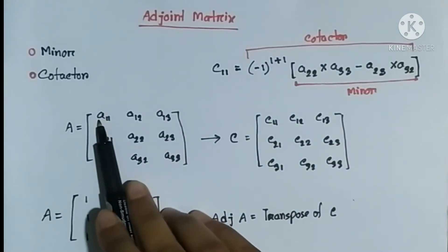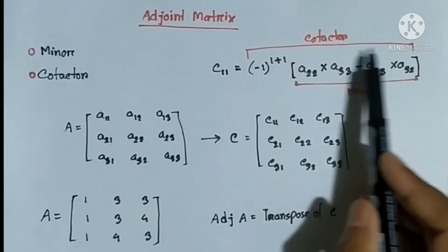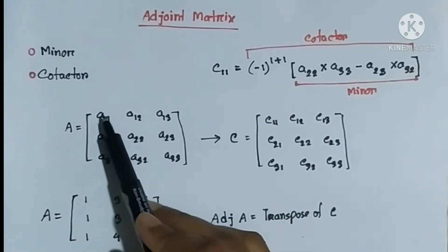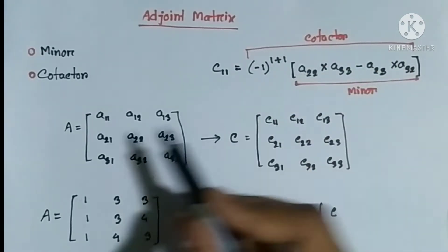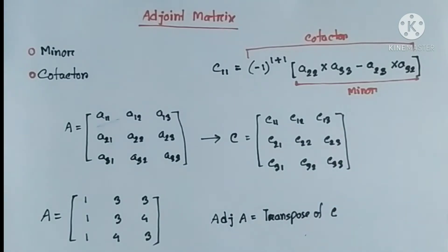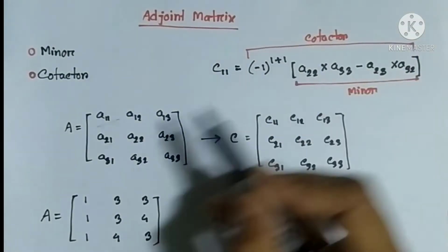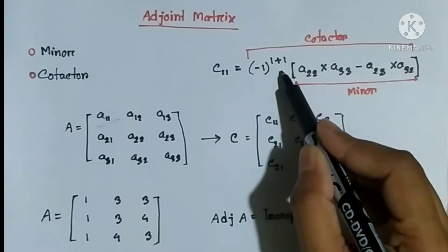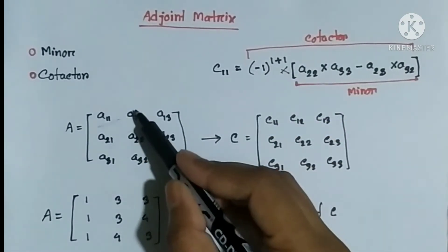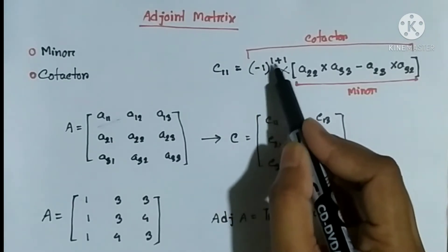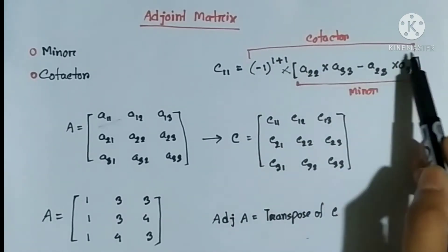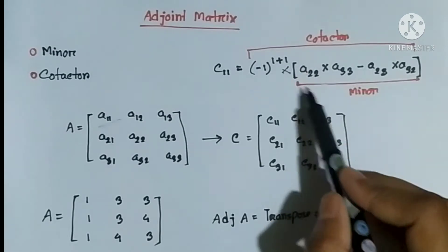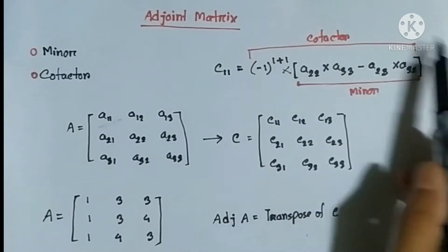What is co-factor? The co-factor will be the minor times (-1) to the power of (i+j) for position (i,j). So if we find the co-factor at position (1,1), it will be (-1) to the power of (1+1) multiplied by the minor. For position (1,2), the co-factor will be the minor multiplied by (-1) to the power of (1+2).